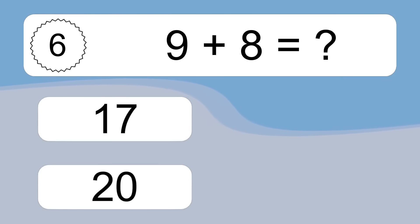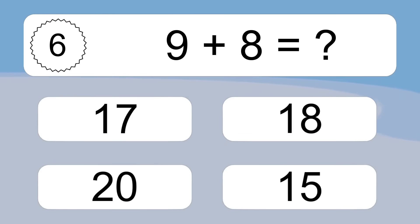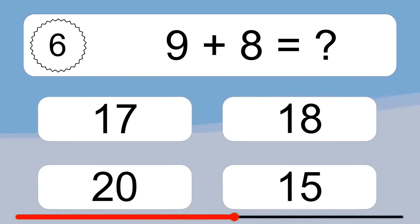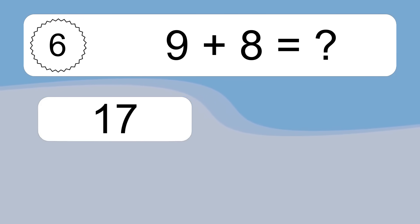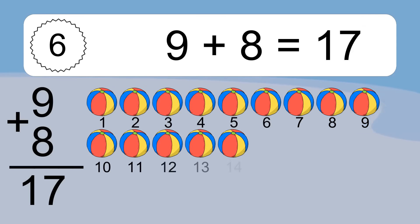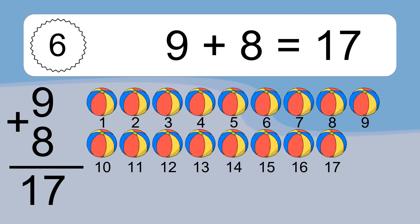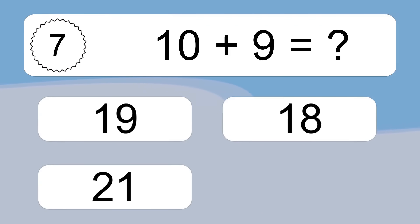9 plus 8 equals what? 9 plus 8 equals 17. Let's count it: 1, 2, 3, 4, 5, 6, 7, 8, 9, 10, 11, 12, 13, 14, 15, 16, 17.